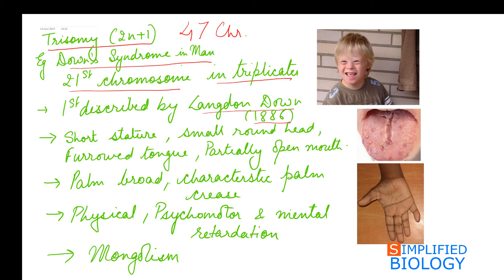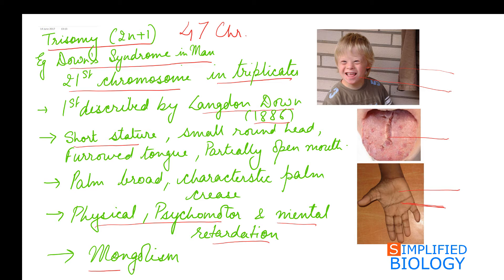Patients with Down syndrome have short stature, a small round head, furrowed tongue, partially open mouth, and broad palms with a characteristic palm crease — seen only in Down syndrome patients. Physical, psychomotor, and mental retardation occur: they are physically retarded, body movements are not under their control, and they are mentally retarded. Down syndrome is also known as mongolism, as these patients have mongoloid features.